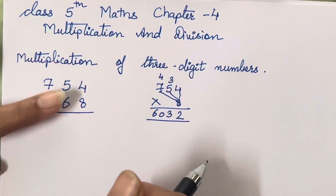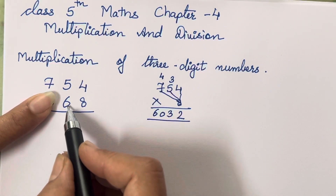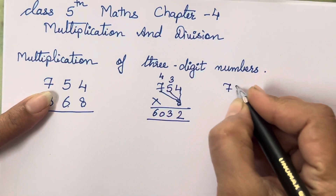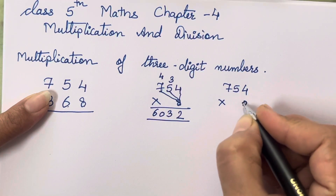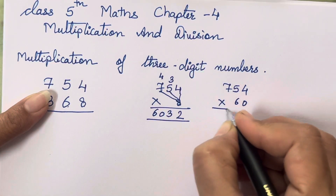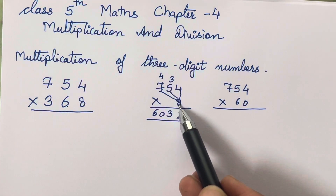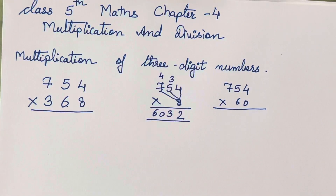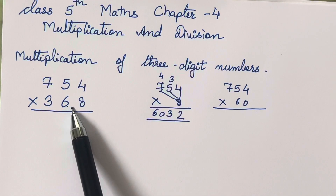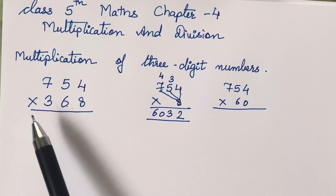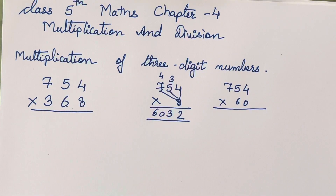Now you have to take 6. Before 6, we don't take 8 again. What we have to do is write a 0 first, because 6 is in the tens place. We have to take it in the tens place only, otherwise you will get the wrong answer. In 368, the 6 is in the tens place, so you have to write 6 in the tens place only.